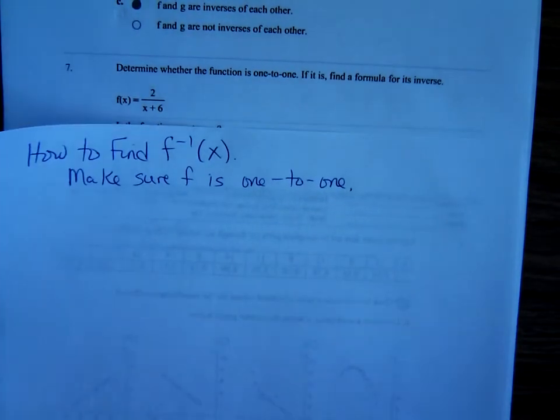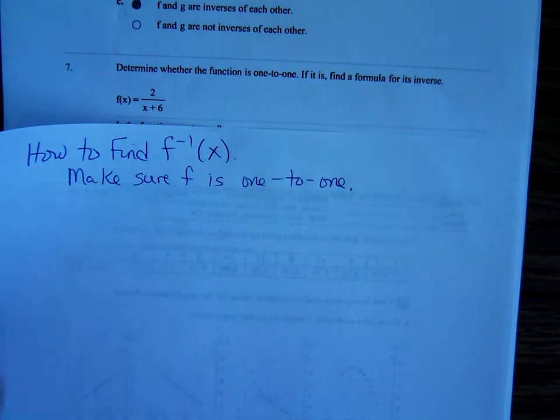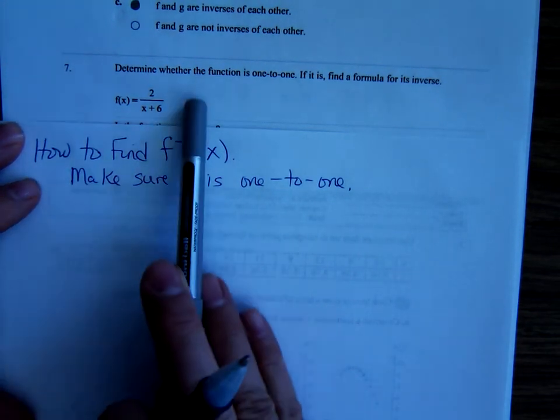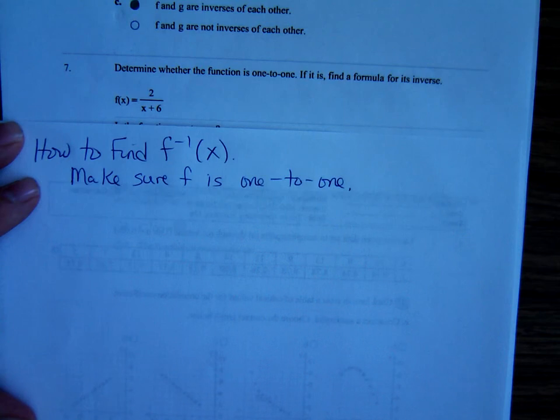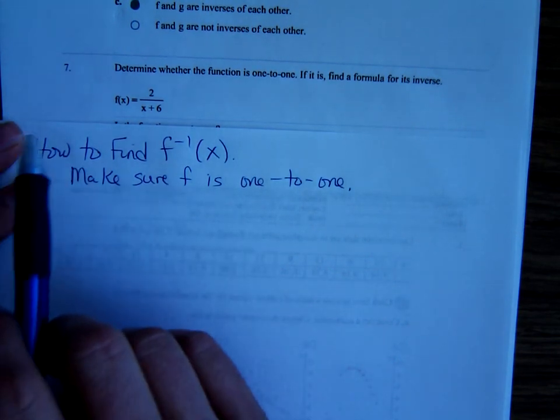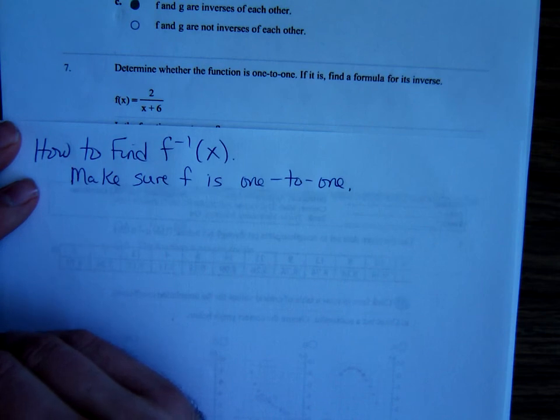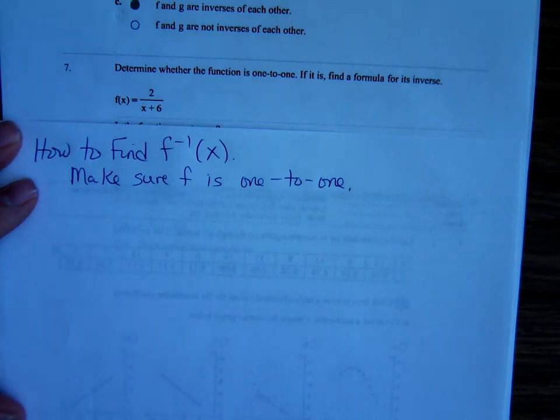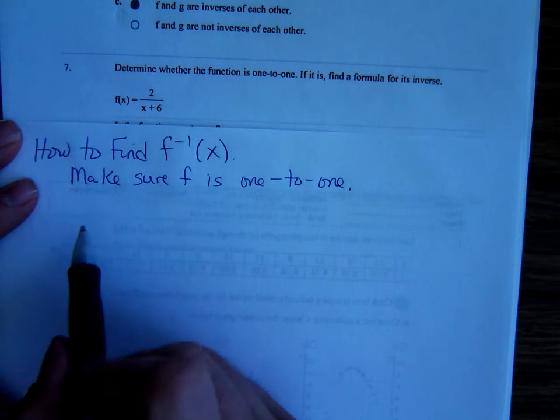Well, we haven't graphed any rational functions. So, on number 7, to make sure it's one-to-one, how can we decide if it's one-to-one? Well, for our purposes, the type of functions we've graphed so far that aren't one-to-one are quadratic functions. We've decided quadratic functions are not one-to-one. If there's no even exponents in the statement, we're just going to sort of assume it's one-to-one.